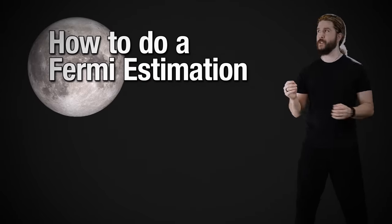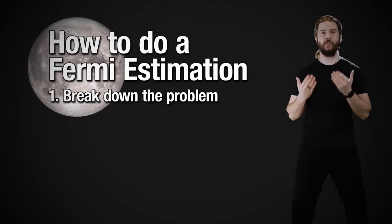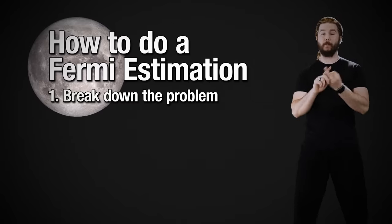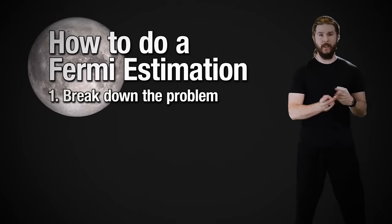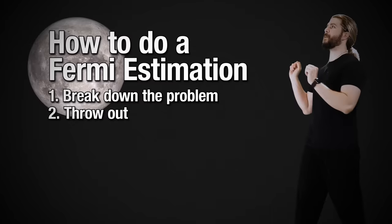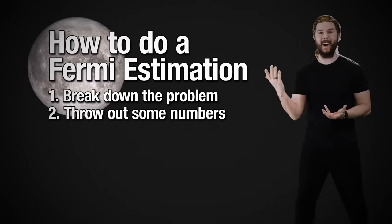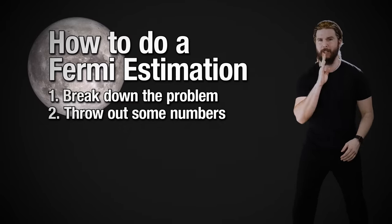The first thing that we're going to do is identify and break down the problem. What do we need to know to make a good guess? Well, we need to guess the distance to the moon, the number of hairs on my head, and the average length of those hairs. The next thing that we're going to do is just throw out some numbers, and dare to be imprecise here, because over and under estimates tend to cancel out. That's the real secret of this process.